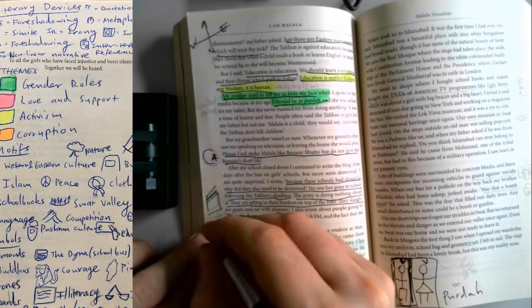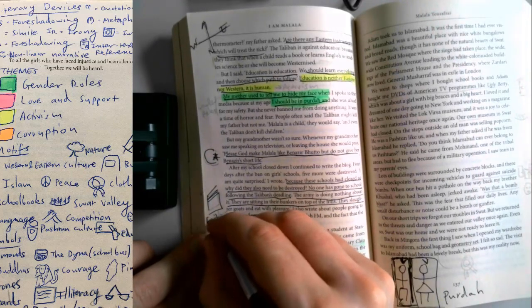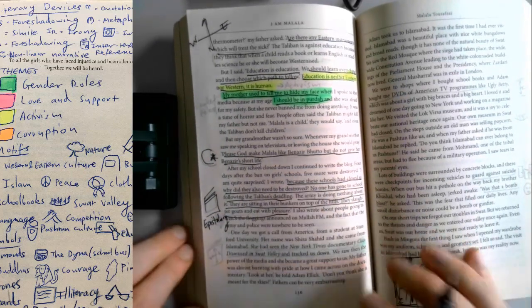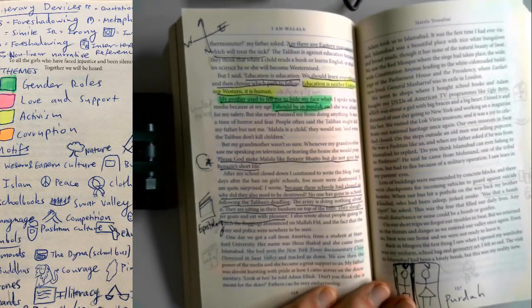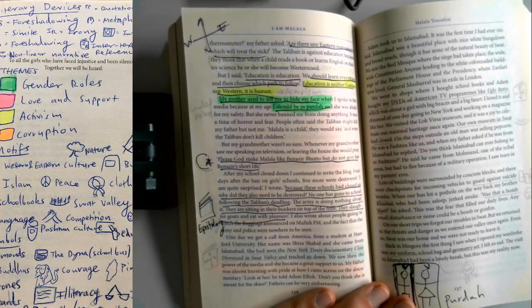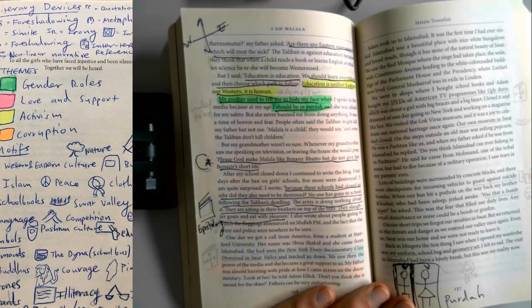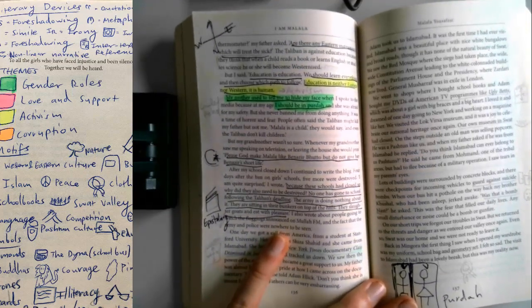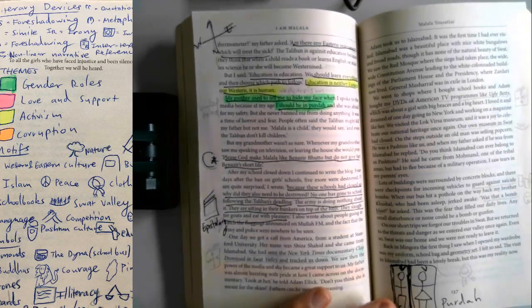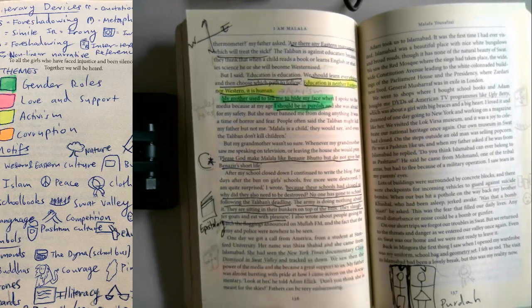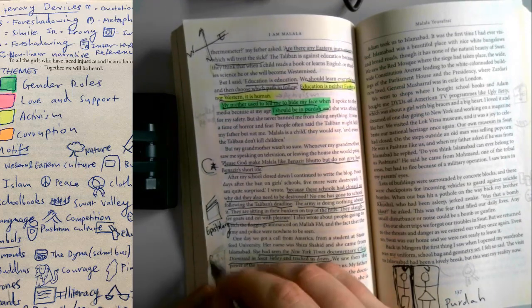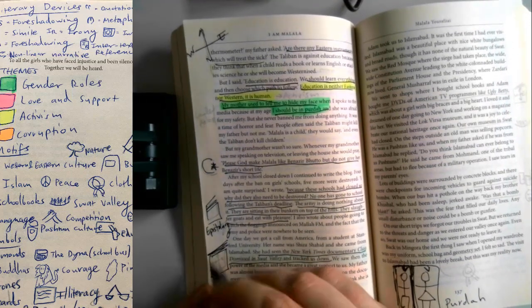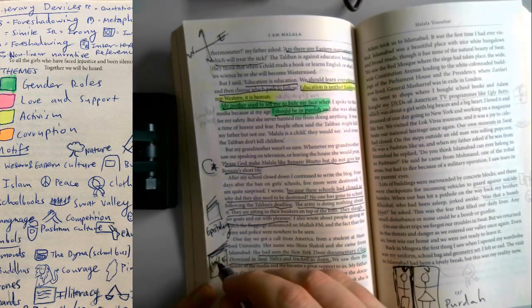We've also got epistolary. Because these schools are closed, why did they also need to be destroyed? No one has gone to school following the Taliban's deadline. The army is doing nothing about it. They're sitting in their bunkers on top of the hills. They slaughter goats and eat with pleasure. She had seen the New York Times documentary, Class Dismissed in Swat Valley, and tracked us down. So again, the world has come to Malala and come to Swat Valley. So it's the New York Times and the documentary bringing the West and the East forward. And again, intertextual references.